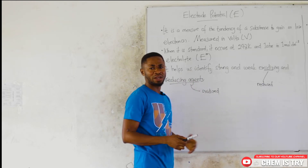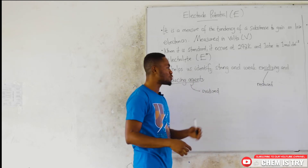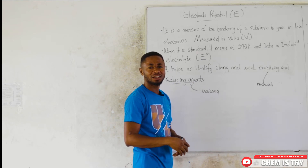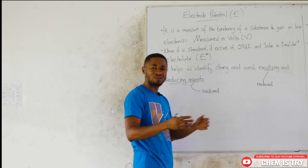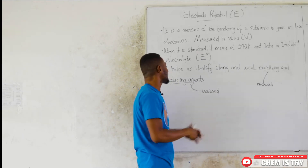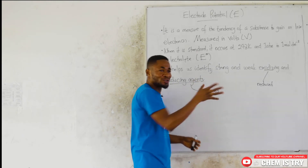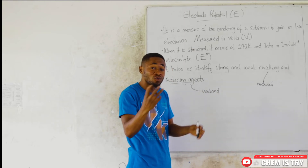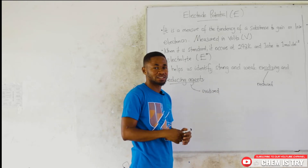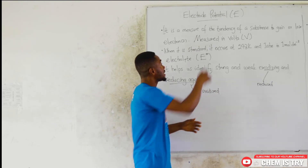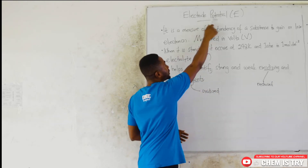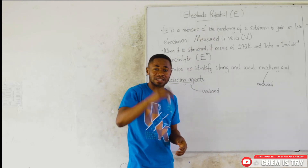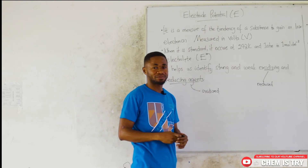How do we know that this substance is a very good oxidizing agent or a weak one, or which substance is a strong reducing agent and which substance is a weak reducing agent? The electrode potential value is what is going to give us that idea.